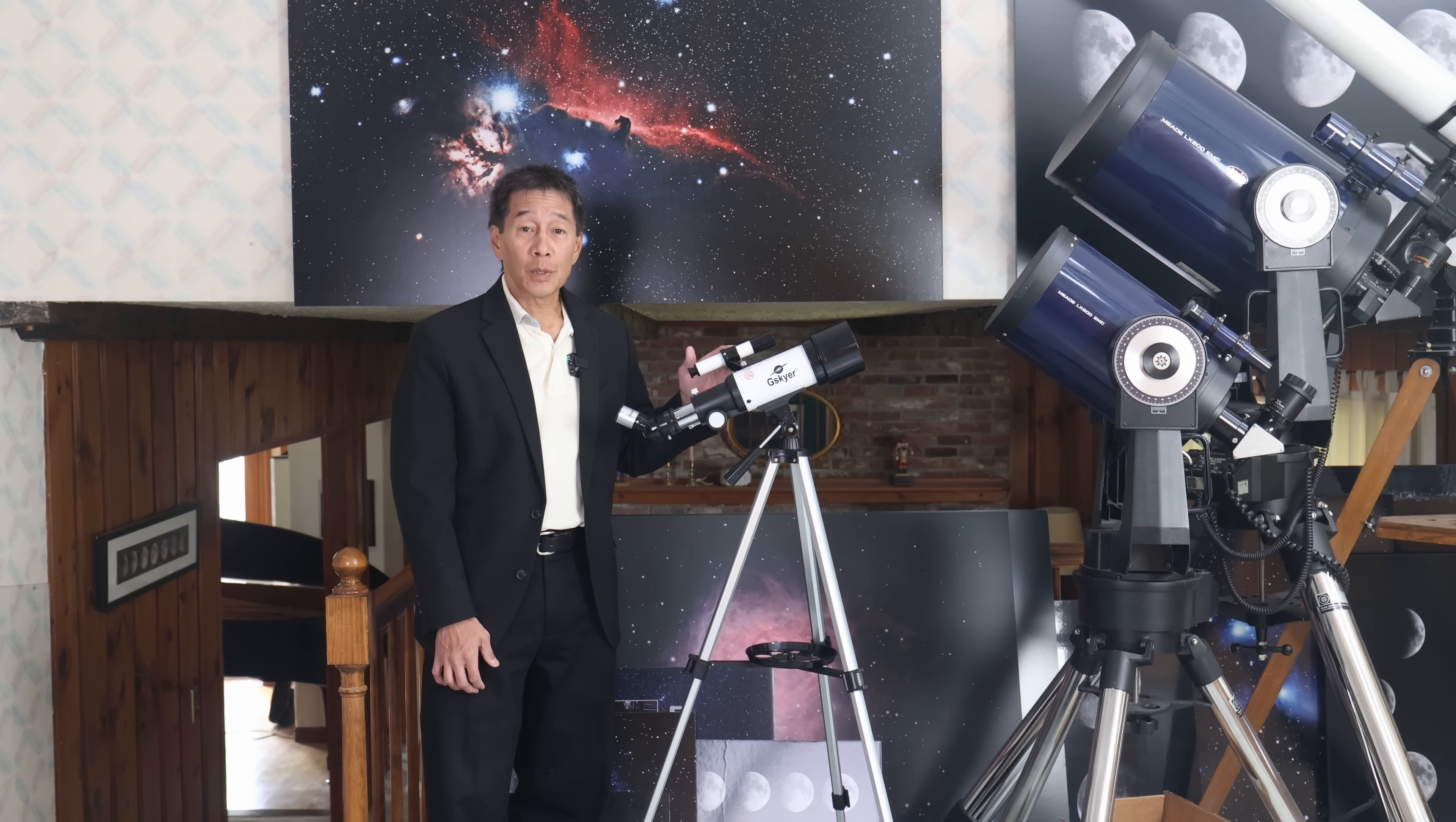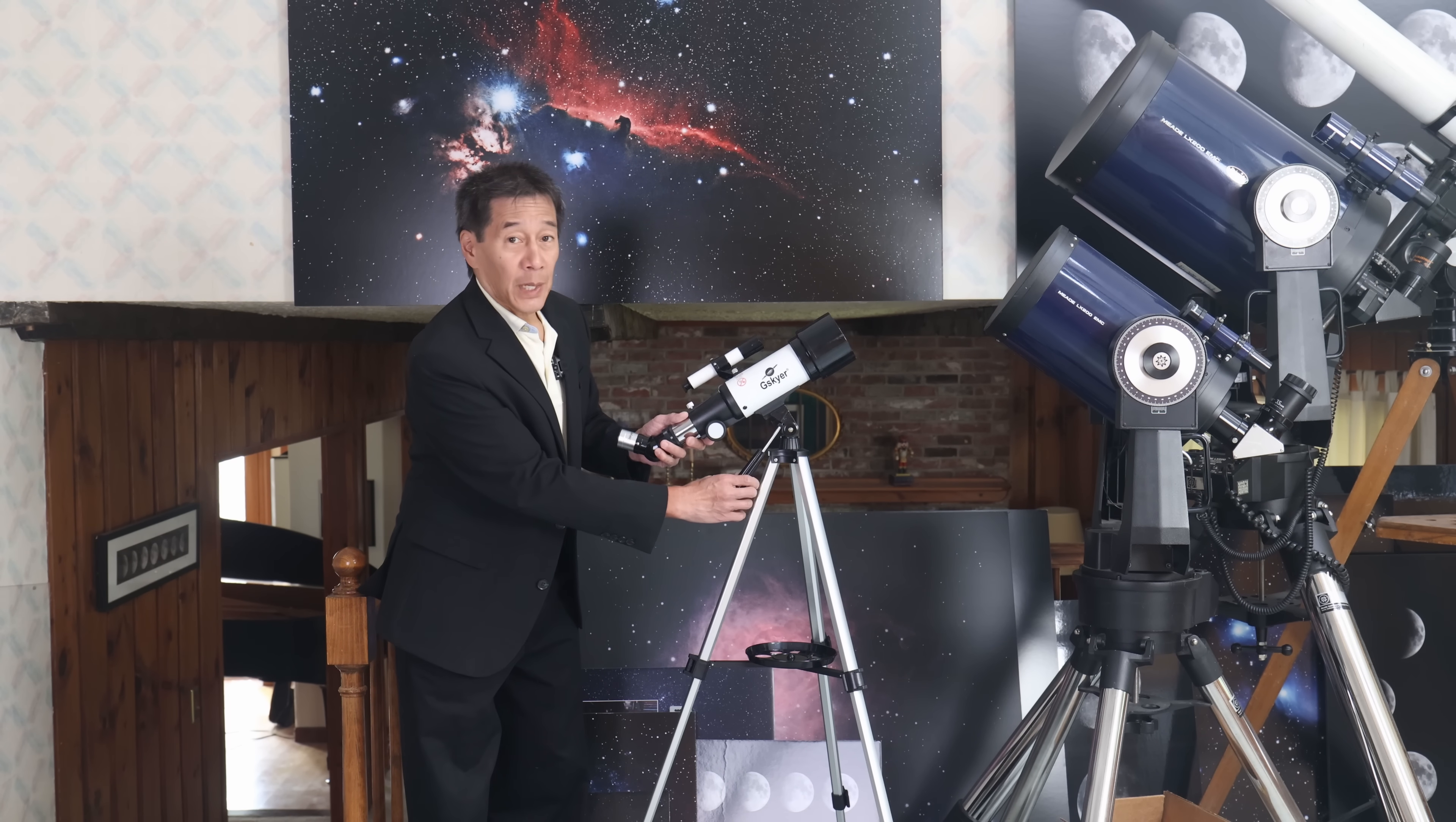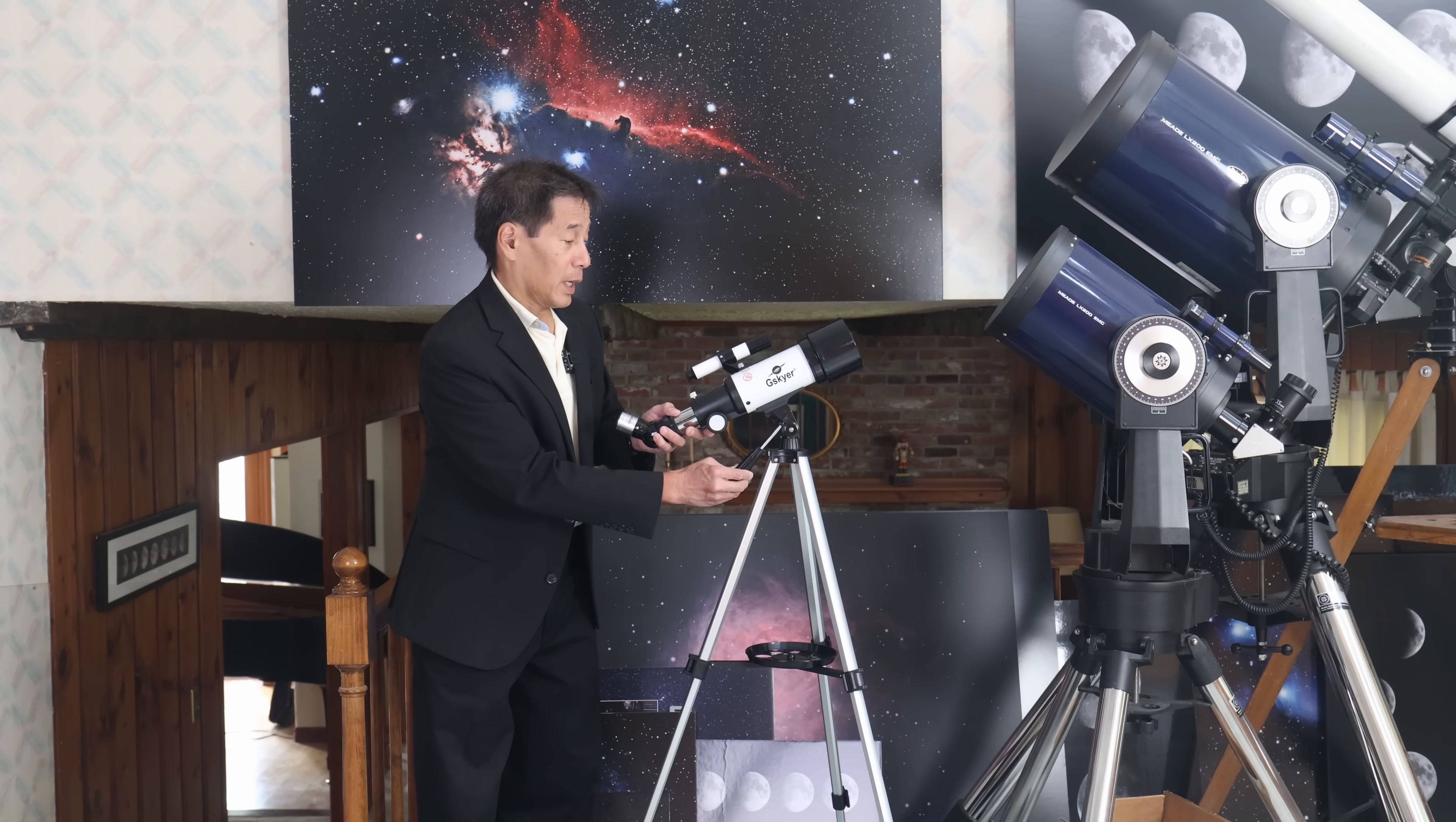Here is a low power finder scope designed to help you find things. And the mount, which goes alt-azimuth, we call it, it goes up and down and it goes left and right.